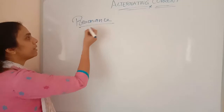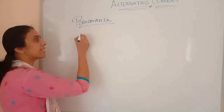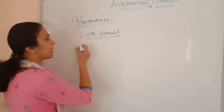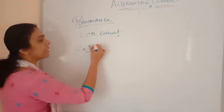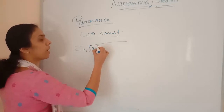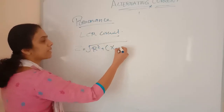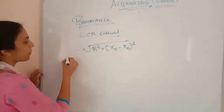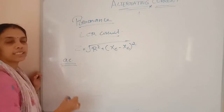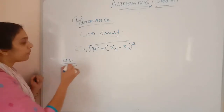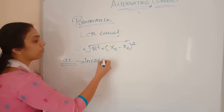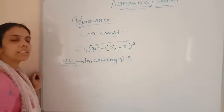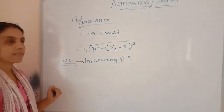In the case of resonance in the LCR circuit, we know about the resistance factor that is impedance. In the case of the LCR circuit, Z is equal to the square root of R squared plus (XC minus XL) squared. Here we are applying an AC source — alternating current — over there. While we are increasing the frequency, what will happen in this LCR circuit?